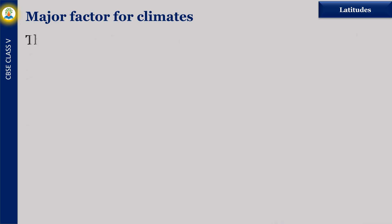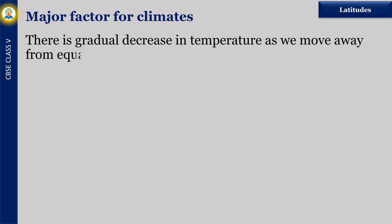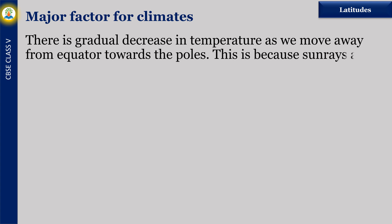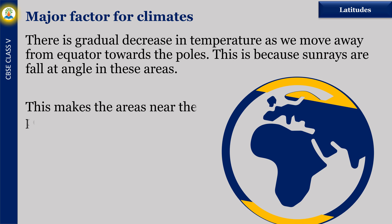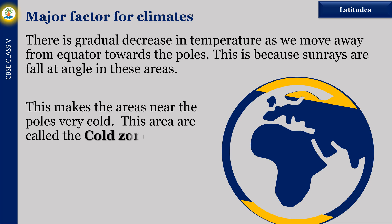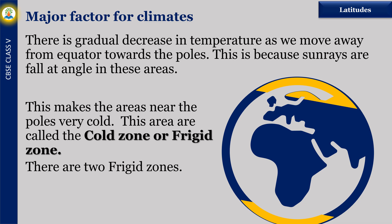There is a gradual decrease in temperature as we move away from the equator towards the poles. This is because sun rays fall at an angle in these areas, making the areas near the poles very cold. These areas are called the Cold Zone or Frigid Zone. There are two Frigid Zones: the South Frigid Zone and the North Frigid Zone.